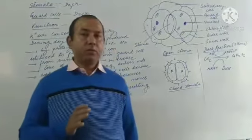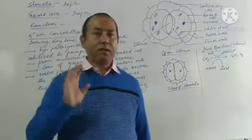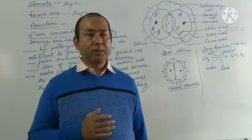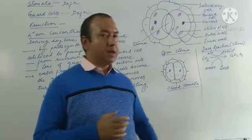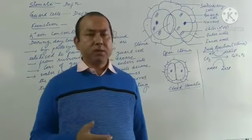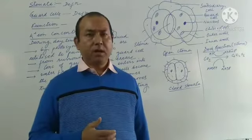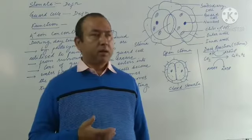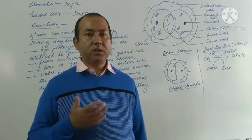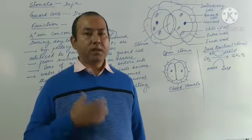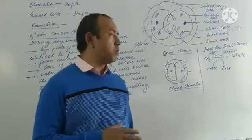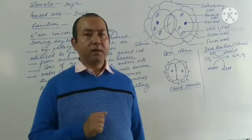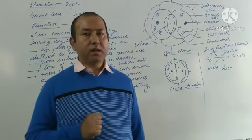In higher classes you will learn the dark reaction in a more complicated manner — you will learn about the Calvin cycle. This dark reaction involves several steps. In class 11 you will learn it in the form of the Calvin cycle, C3 pathway, C4 pathway, and the Hatch-Slack pathway. For now, we are supposed to learn dark reaction in a very simple manner.